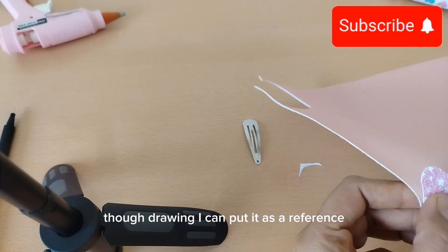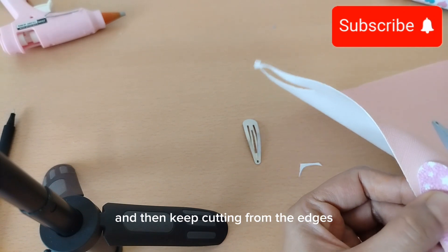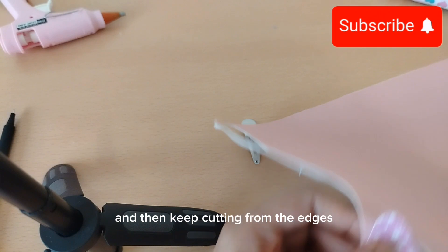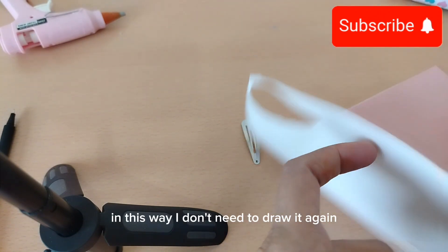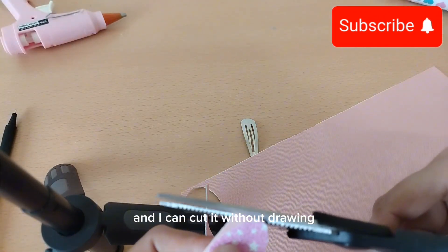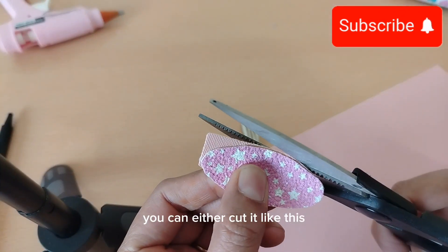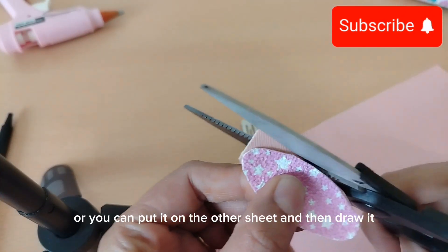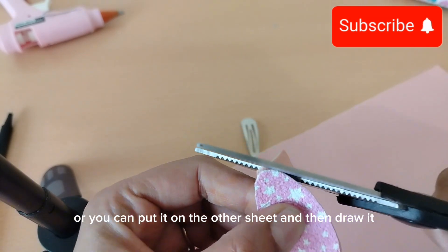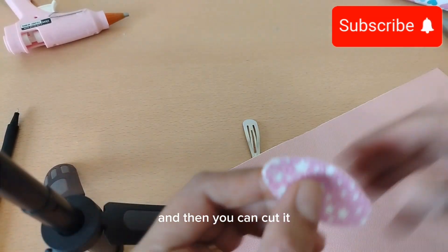I can put it as a reference and then keep cutting from the edges. In this way, I don't need to draw it again and I can cut it without drawing. You can either cut it like this, or you can put it on the other sheet, draw it, and then cut it.